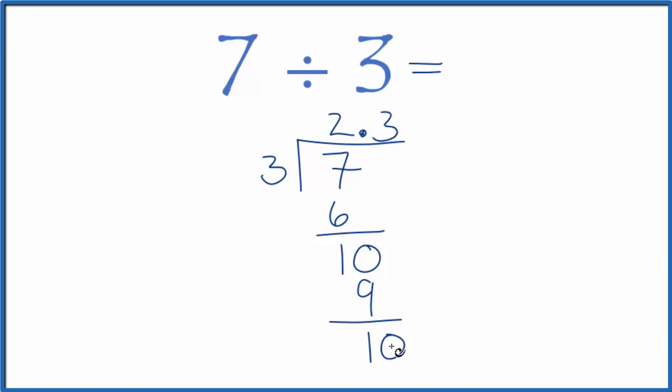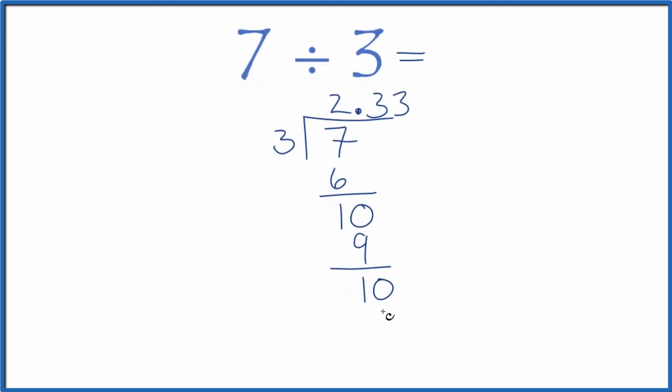So we go over another decimal place. We have our zero here. 3 goes into 10 three times. 3 times 3 is 9, and you can see what's happening here—we're kind of hitting this loop.